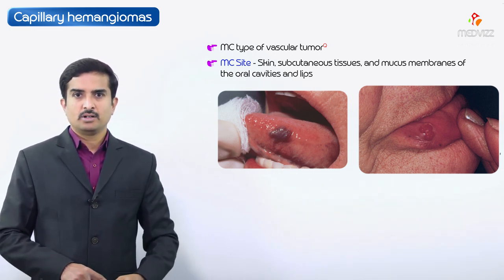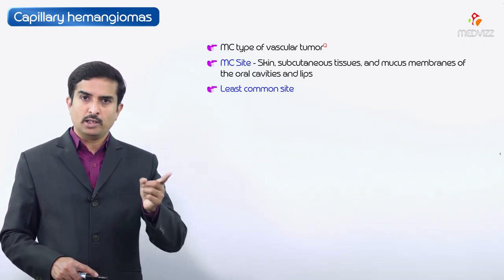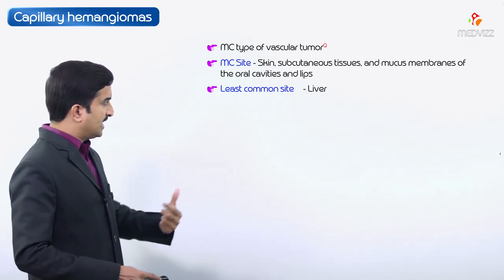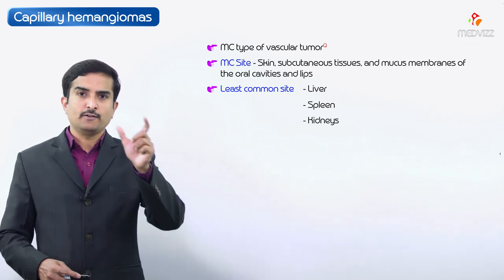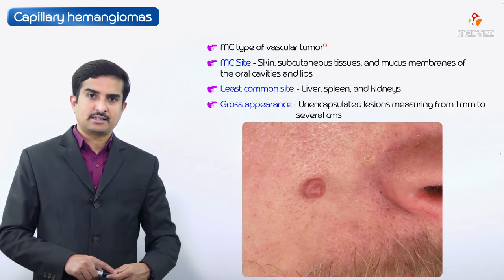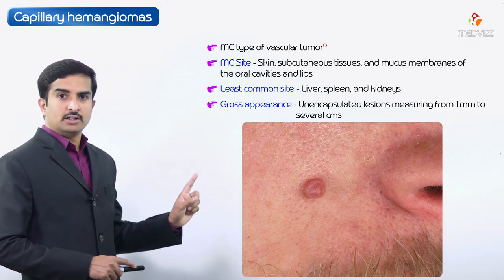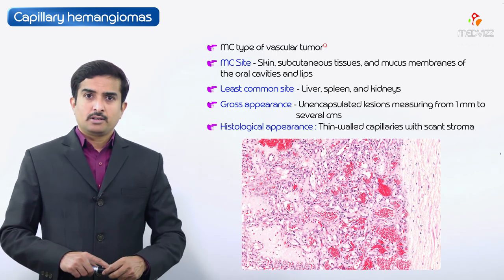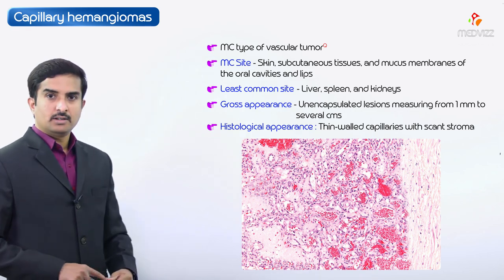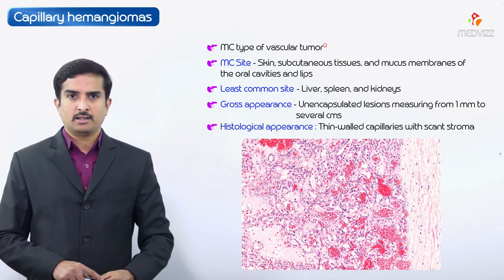As you can see in these images, those are the most common locations for capillary hemangiomas. The least common locations are internal visceral areas — the liver, spleen, and kidneys — with the liver being the most common internal site. Grossly, these are unencapsulated lesions measuring approximately from 1 millimeter to several centimeters. Histologically, they are comprised of thin-walled capillaries with a scant stroma.